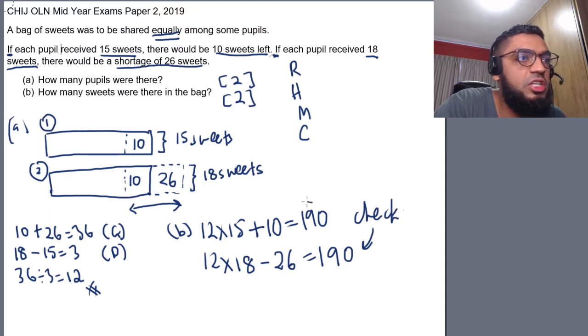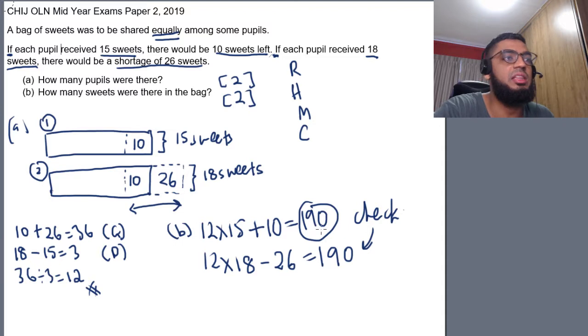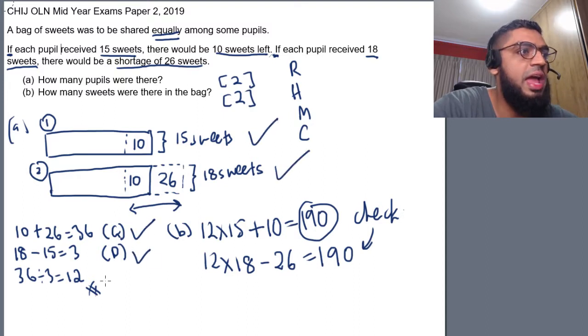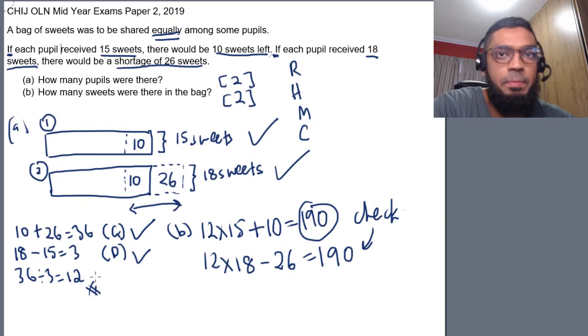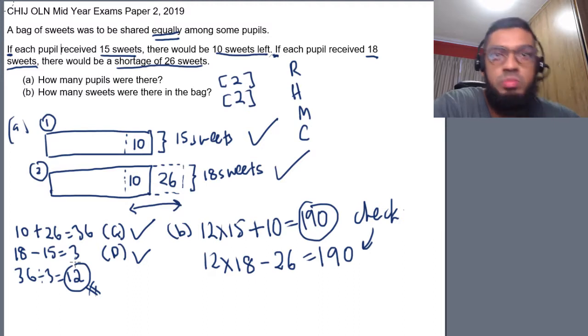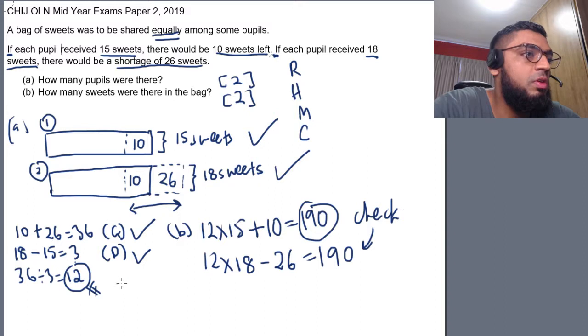So, this is a check that you can do for this particular question. So, the answer for part B is actually 190 sweets. So, again, the key trick here is when you see double ifs, you draw for yourself two models. You find the gap. You find the difference and you divide the gap by the difference to get the number of pupils or number of adults. In different questions, it may be adults, maybe number of men, number of women. So, you get number of people here.